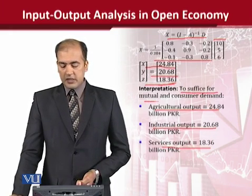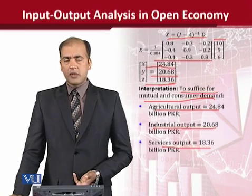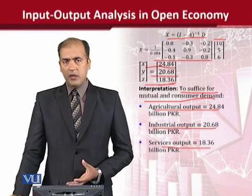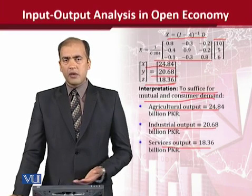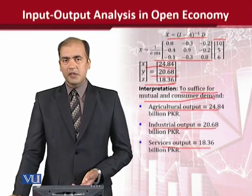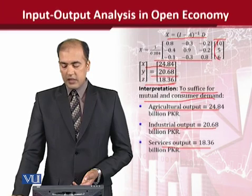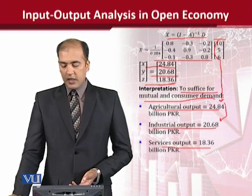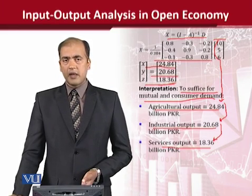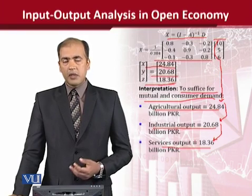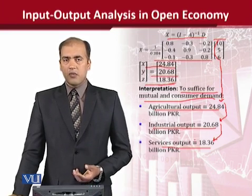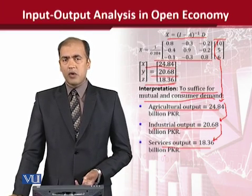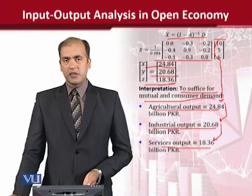These output levels suffice both mutual and consumer demand. In an open economy, firms produce a certain amount for themselves, for neighboring or other industries, and also for consumers. Therefore, the total demand obtained is greater than consumer demand alone, because it includes the industry's own demand, the inter-industry demand from other industries using its output, as well as consumer demand. In this way we can develop an input-output model for an open economy, solve it numerically, and arrive at its interpretation. Thank you.